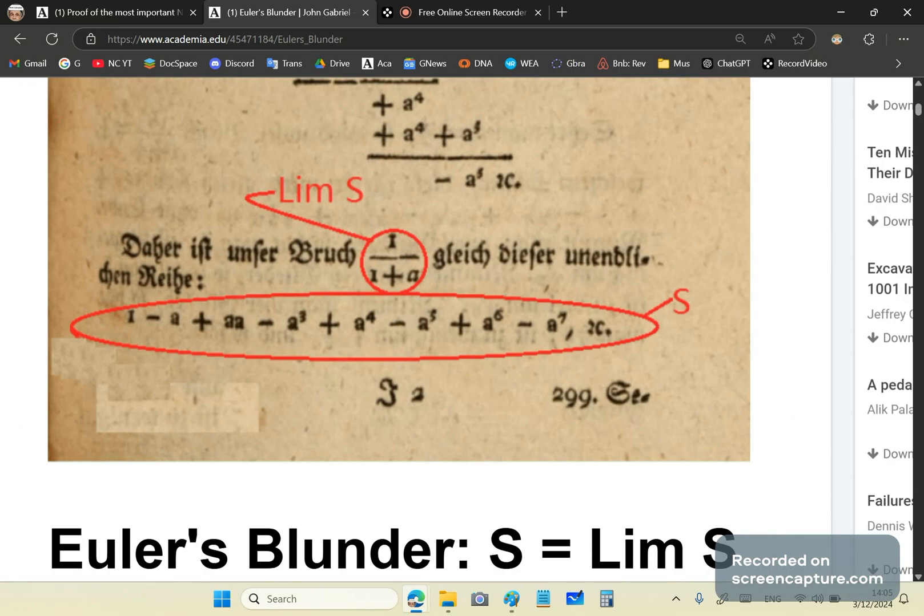To be honest, it would have been a pretty good book if he had not included all this garbage in it. So he says, Daher ist unser Bruch, 1 over 1 plus a, gleich dieser unendlichen Reihe. And what that means literally translated is, therefore, is our fraction, 1 over 1 plus a, equal this unending or infinite series.